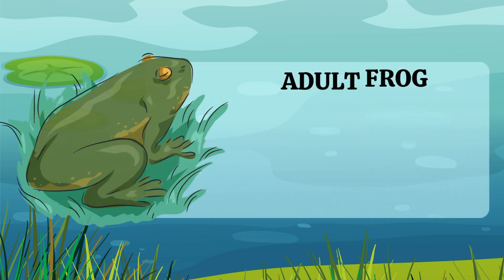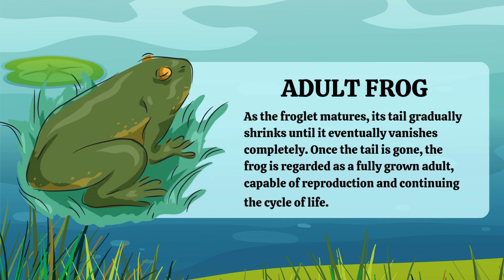As the froglet matures, its tail gradually shrinks until it completely disappears. Once the tail is gone, the frog is regarded as a fully grown adult. Adult frogs are capable of reproduction, ensuring the continuation of the life cycle.